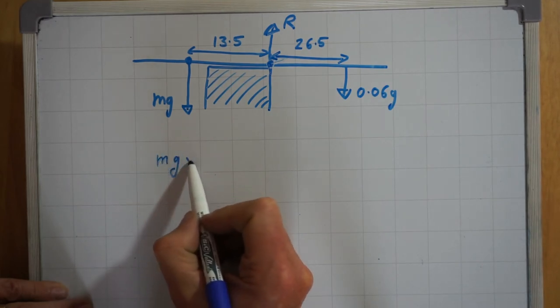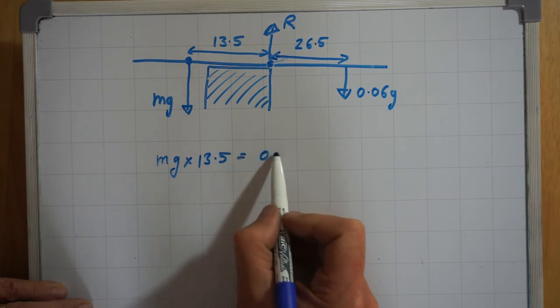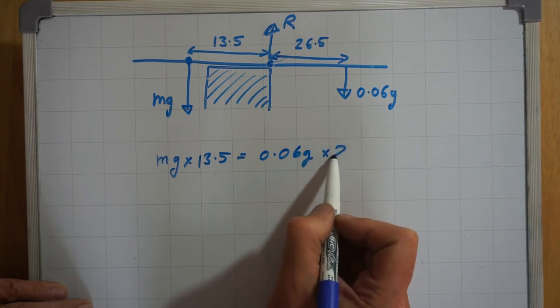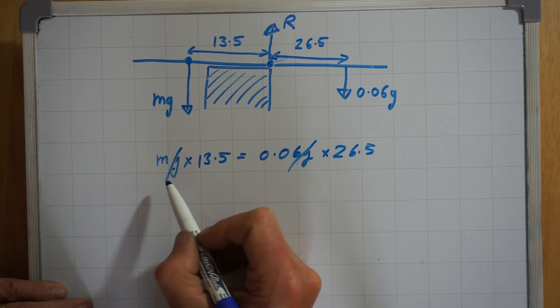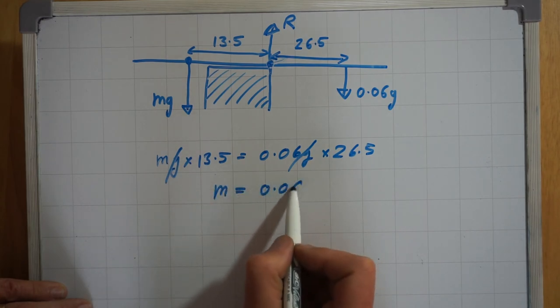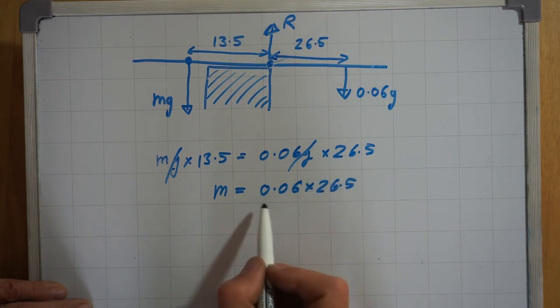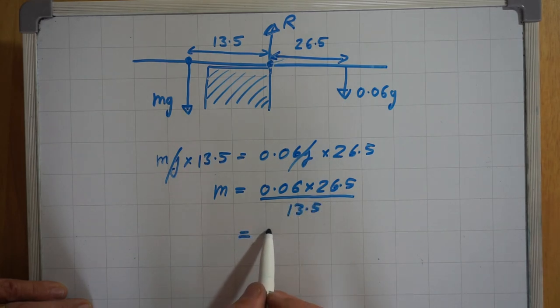The g's will cancel out and so we have M equals 0.06g times 26.5 over 13.5 which will be equal to 0.118.